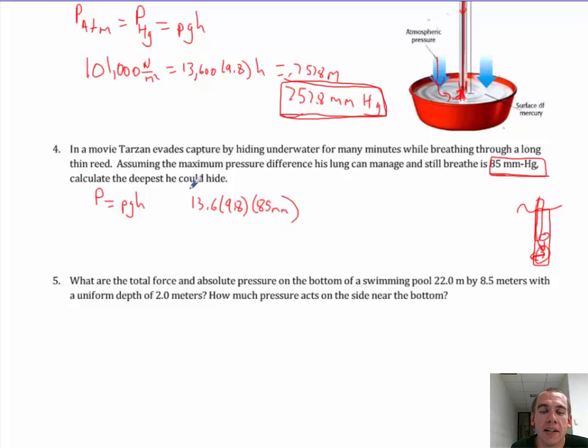Now I'm paying extra special attention to units. This 13.6 is grams per cubic centimeter or grams per milliliter. This 9.8 is meters per second per second. Now that has to be equal to the pressure the water can exert.